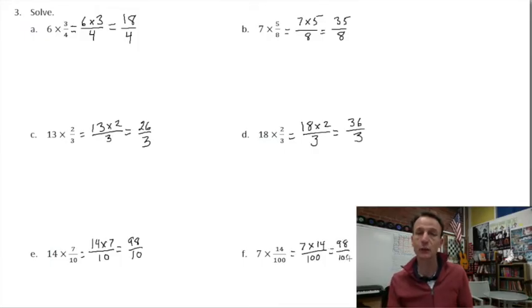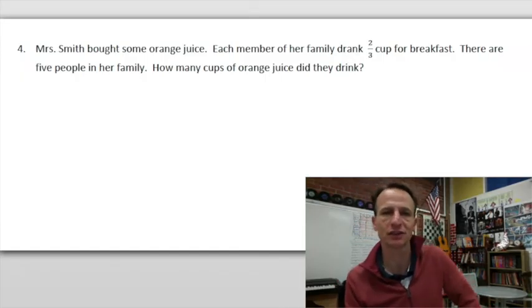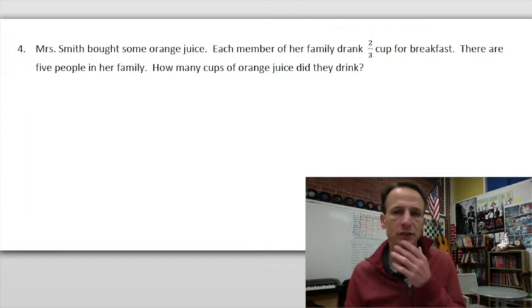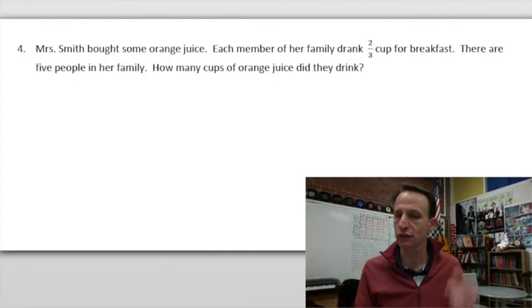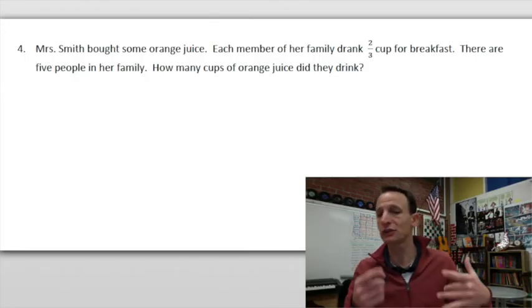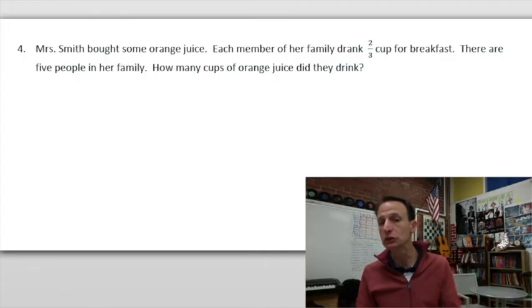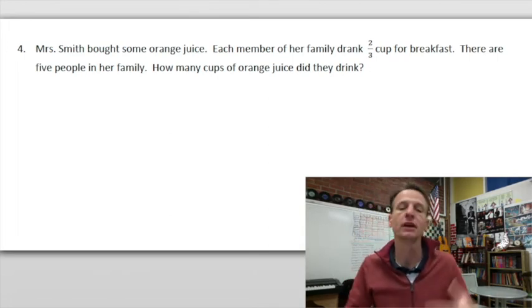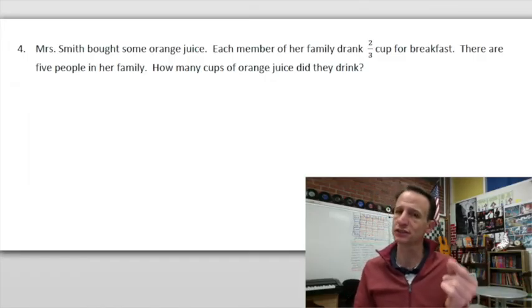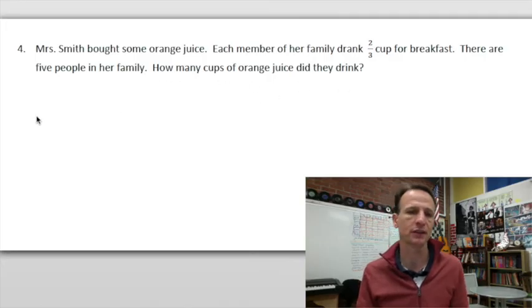As is often their want here in Eureka land, we cap off a quick night's homework with a little word problem. Don't worry, this one's pretty straightforward. Mrs. Smith, bless her heart, bought some orange juice. Each member of her family drank 2 thirds of a cup for breakfast. There are five people in her family. Now sometimes those wordings can be a little confusing, but we are to safely assume here that she is a member of the family. So when it says there are five people in her family, we're going to assume that includes Mrs. Smith.